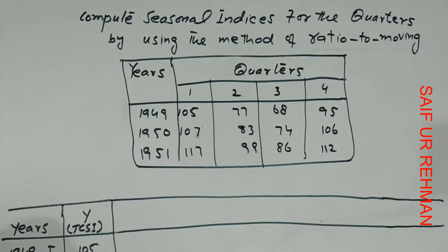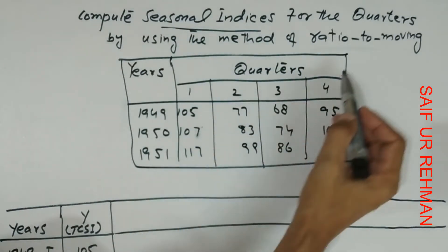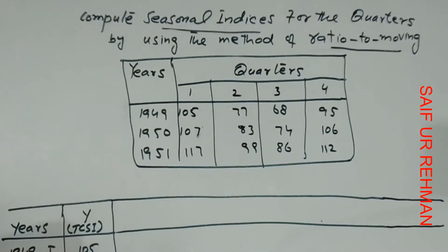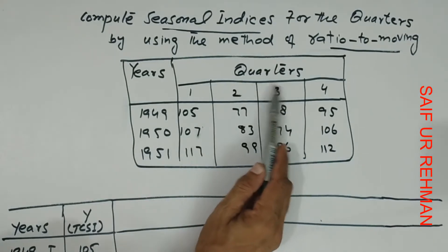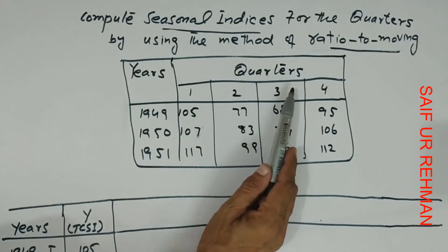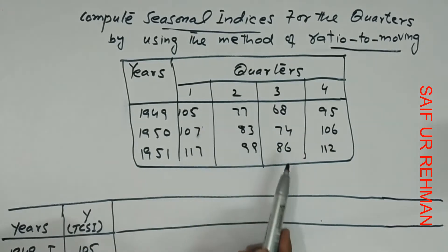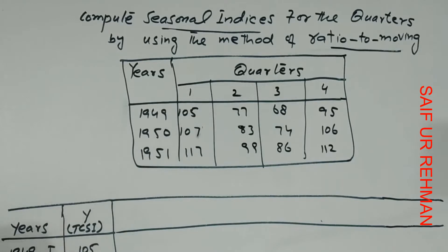Today we are looking to compute the seasonal indices by using the ratio to moving average method. We have data given in the form of quarters, and we will find the seasonal indices by this ratio to moving average method.